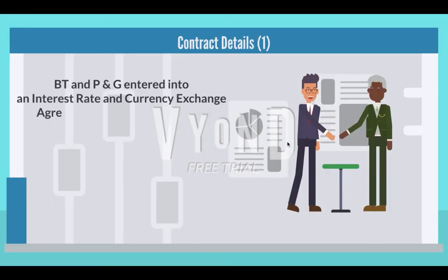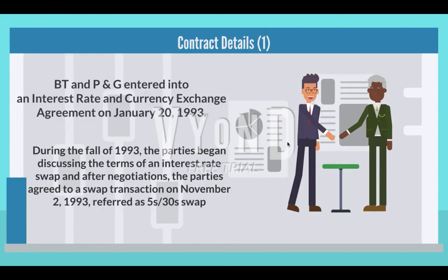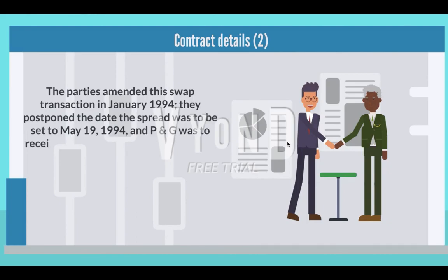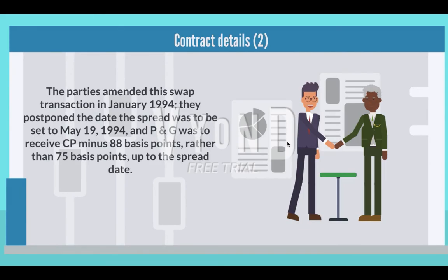BT and P&G entered into an interest rate and currency exchange agreement on January 20th, 1993. During the fall of 1993, the parties agreed to a swap transaction on November 2, 1993, referred to as the fives/thirties swap. The parties amended this swap transaction in January 1994, postponing the date the spread was to be set to May 19th, 1994. P&G was to receive CP minus 88 basis points rather than 75 basis points up to the spread date.